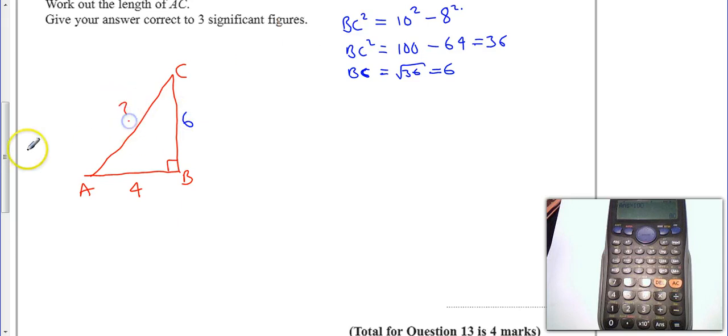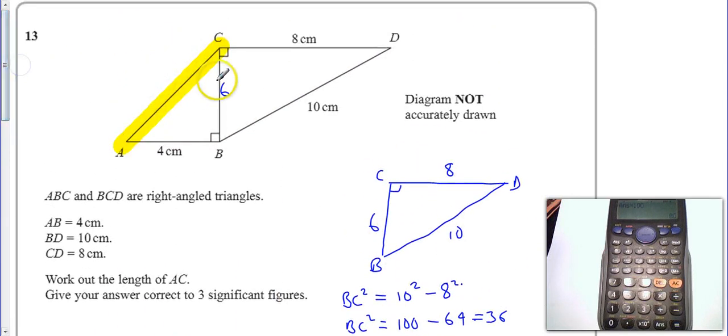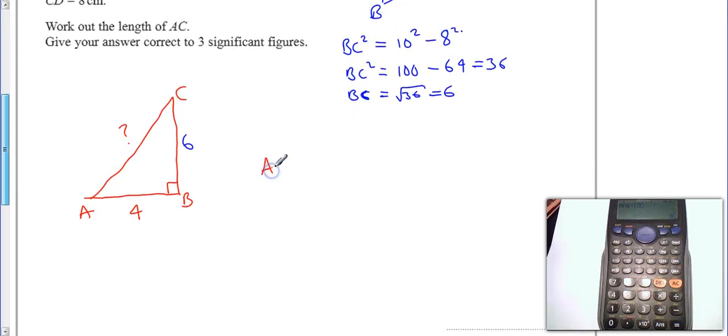And this is the one I want to find. So let's have a quick look back up our diagram. This is the one we want to find, the hypotenuse in this case. So I know that AC squared is equal to 4 squared plus 6 squared.